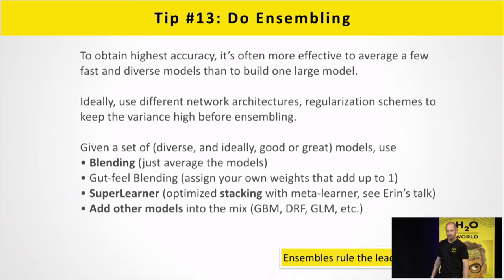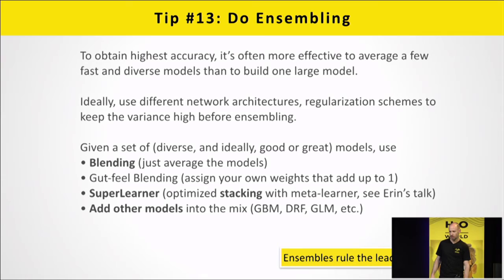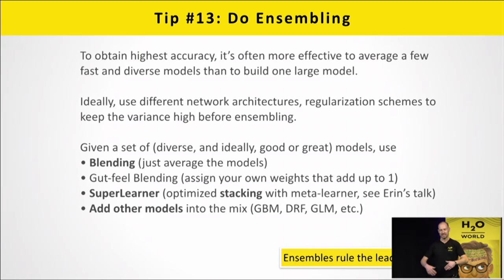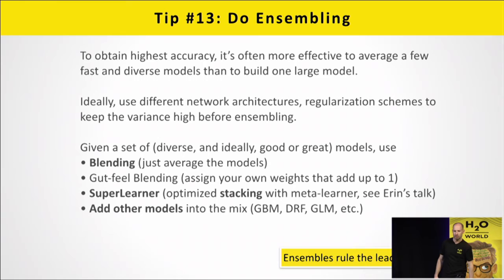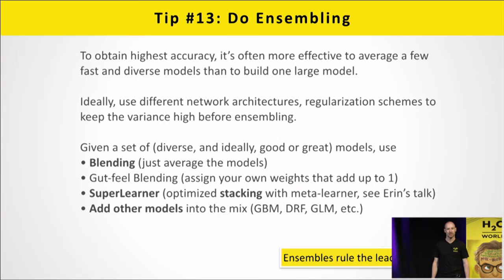The last point is ensembling. Deep learning is a good member of ensembles because it's so different from a tree — it doesn't just cut up the space, it makes nonlinear features. Either you blend them with a weight per model, or you stack where each model makes predictions and another model on top blends them on a row-per-row basis. At minimum, take five deep learning models and average them. That always works.